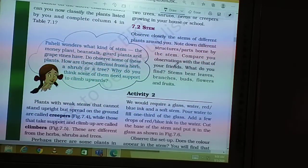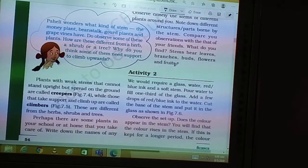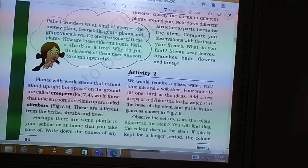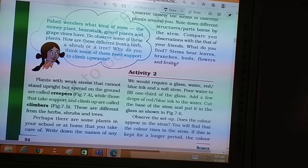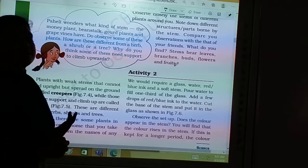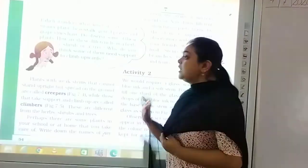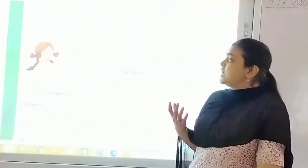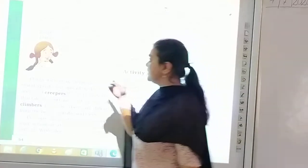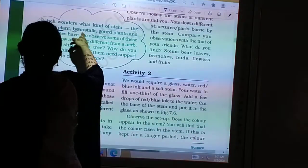There is another category of plants. Paheli wonders what kind of stem plants like the money plant, bean stalk, gourd plant, and grape vines have. Do observe some of these plants — how are they different from herbs, shrubs, and trees? Why do you think some of them need a support to climb up? In our surroundings, there are certain plants like the money plant.